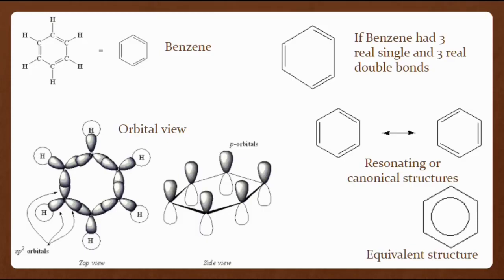The overlap of the sp² orbitals around the ring produces a framework of six sigma bonds, while the unhybridized p orbitals which are perpendicular to this plane overlap in a side-to-side fashion to form three pi bonds. The pi bonds are delocalized around the ring, leading to an unusual stability for the benzene ring compared to other alkenes. Instead of three real single bonds and three real double bonds in the ring, benzene may be thought of as consisting of six 1.5 bonds represented by the resonance structure as shown. All of the positions in the benzene ring are thus equivalent.